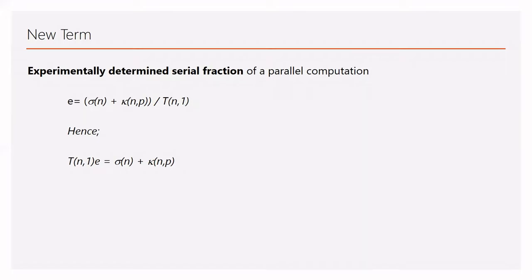We define a new term E: the experimentally determined serial fraction of a parallel computation, defined as E is equal to Sigma plus Kappa, the whole term divided by T.